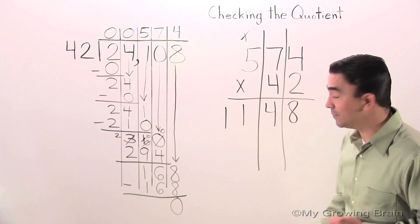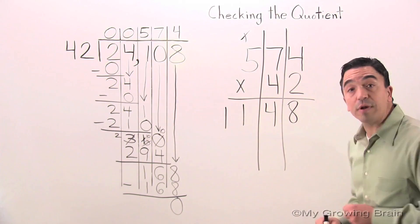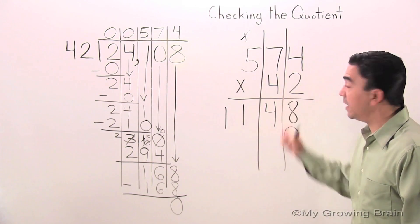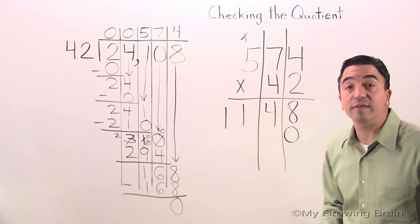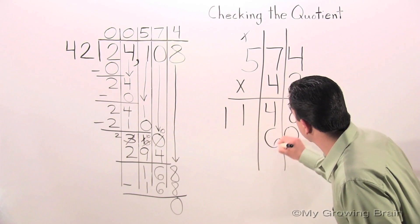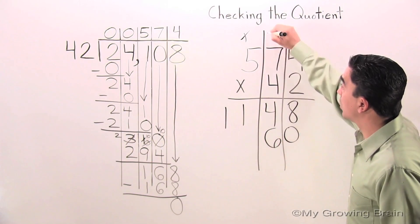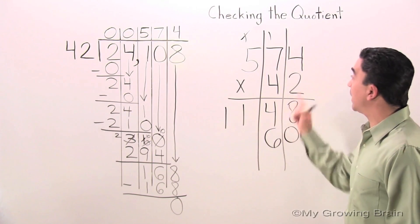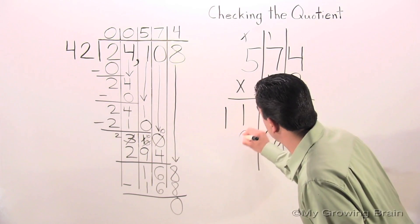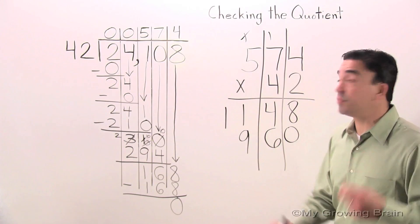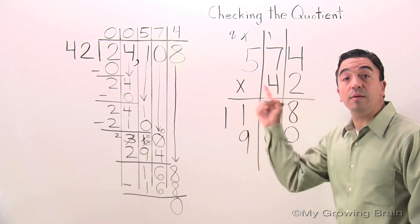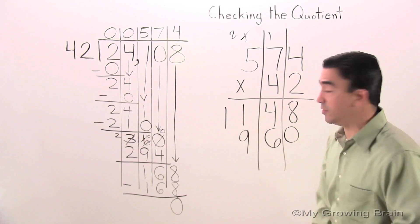Now I'm going to put up a placeholder and multiply starting with the tens. 4 times 4 is 16. Regroup the 1. 4 times 7 is 28, plus 1 is 29. Regroup the 2. 4 times 5 is 20, plus 2 is 22.